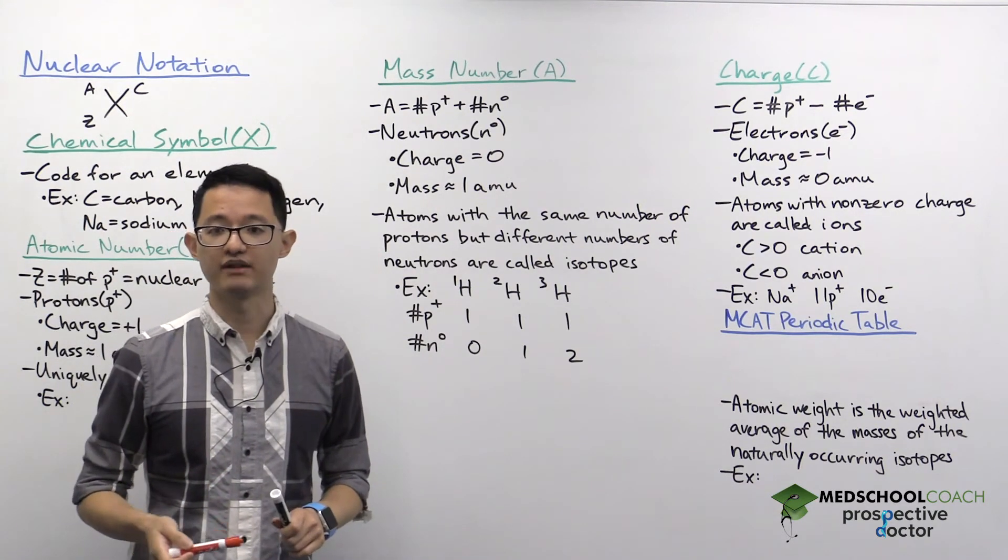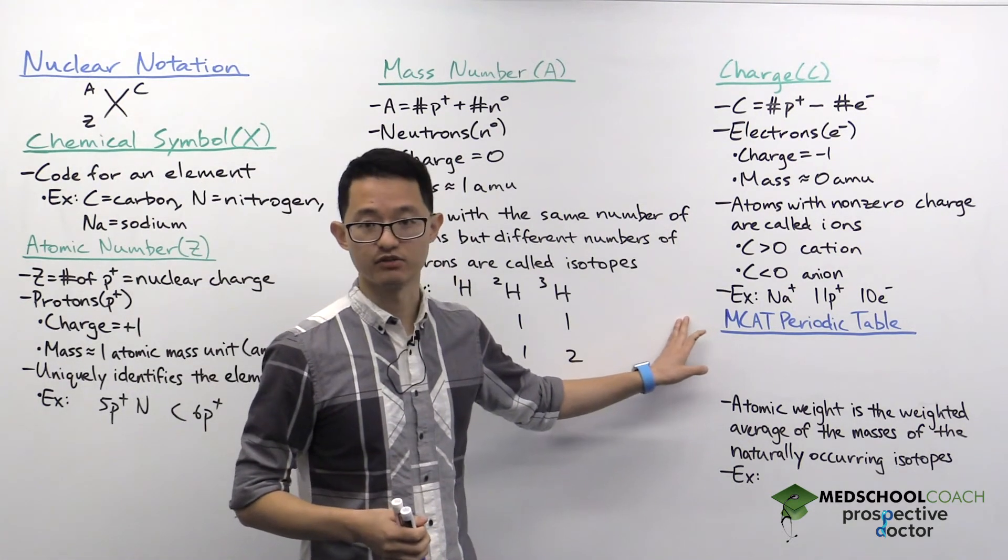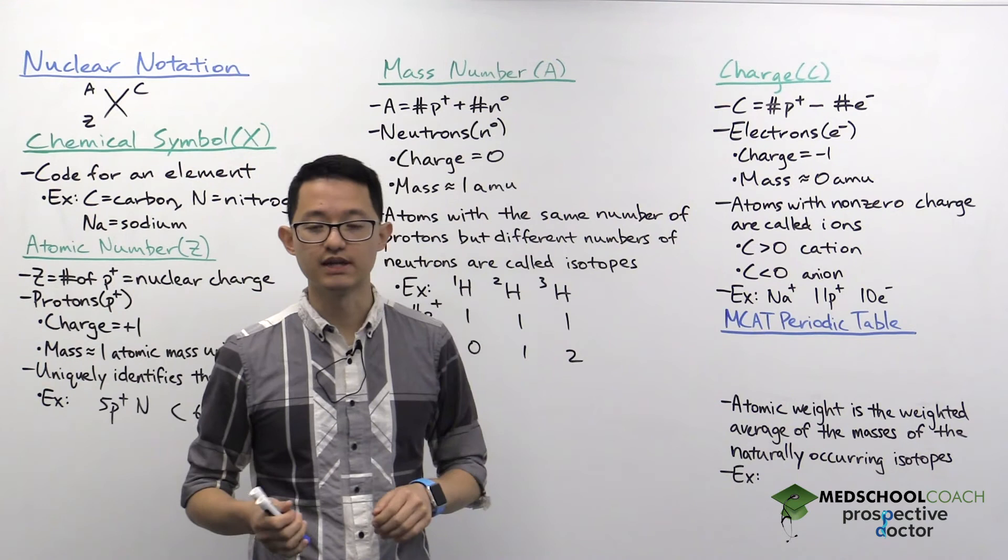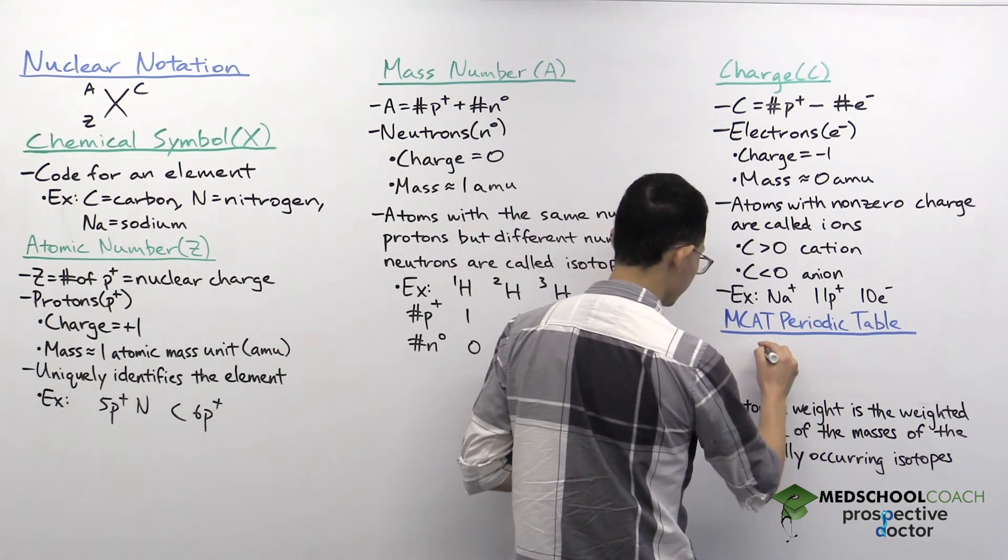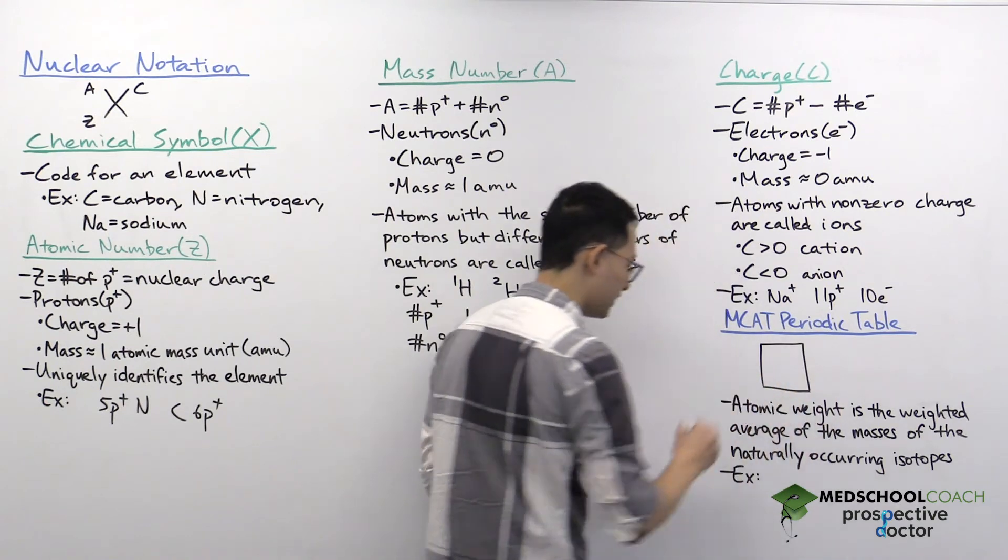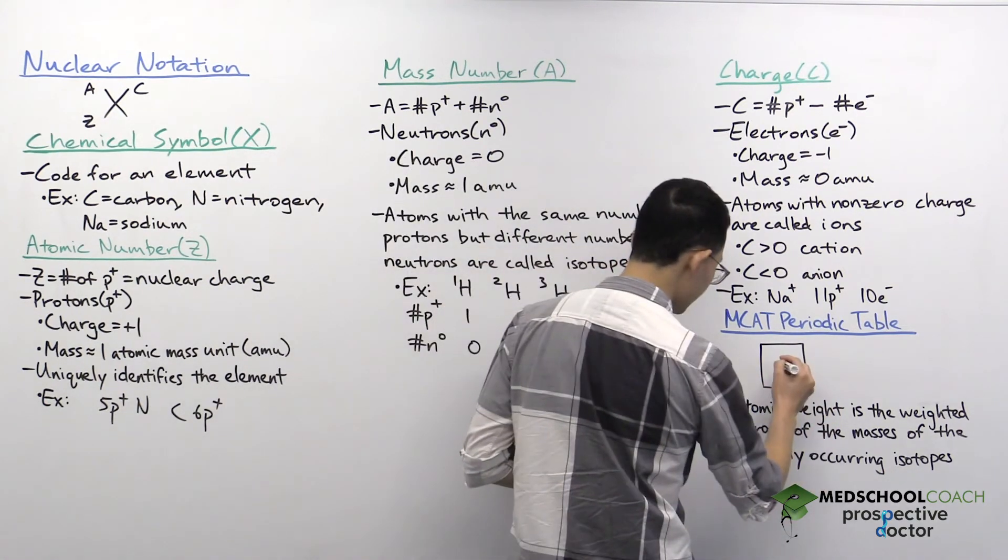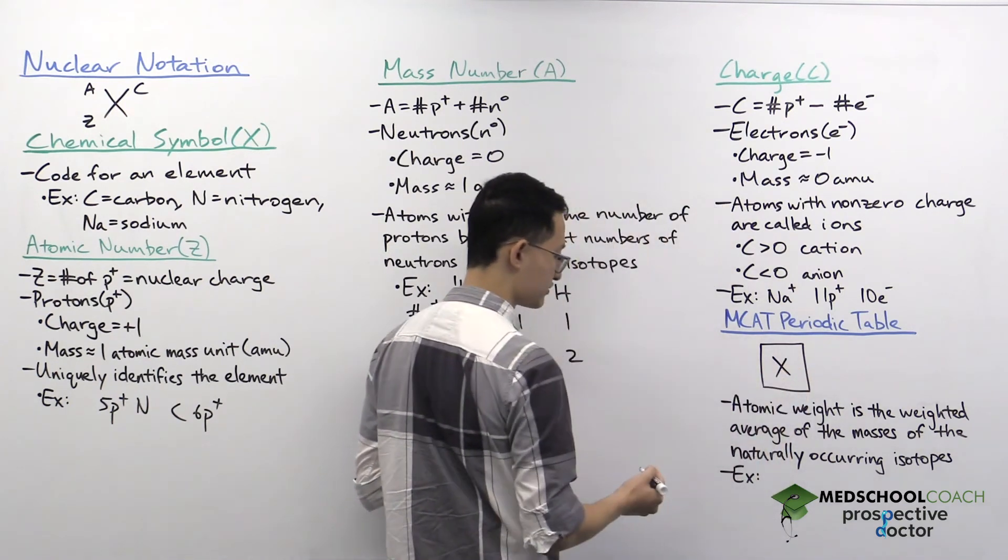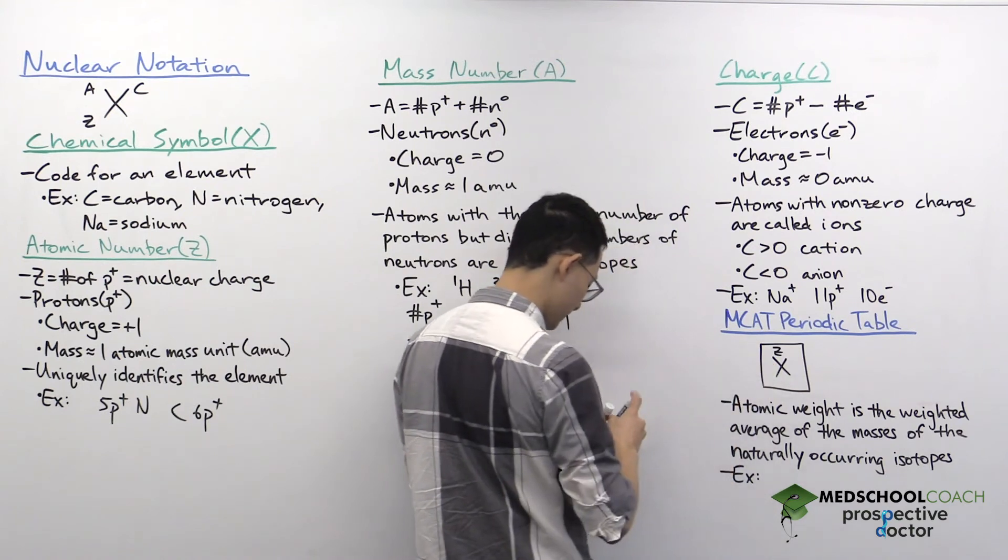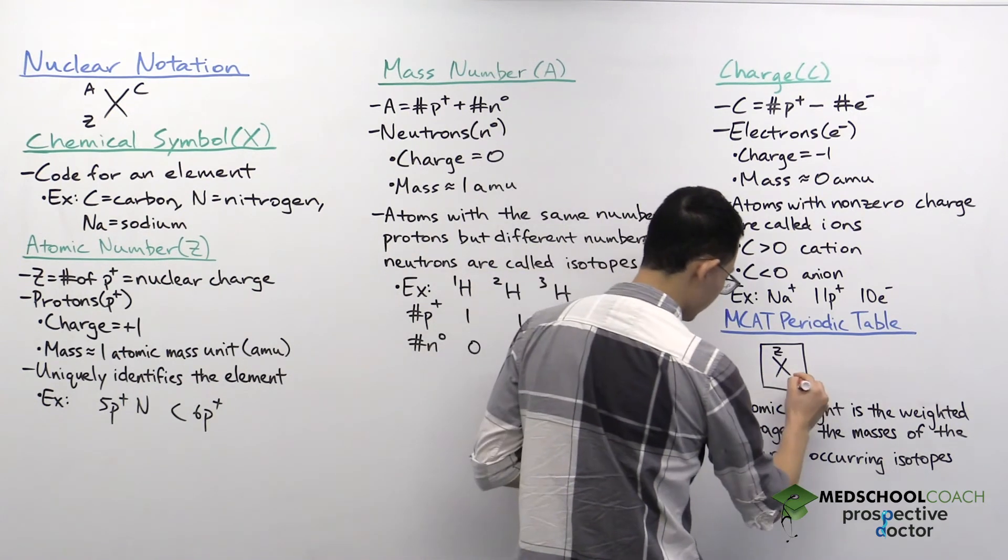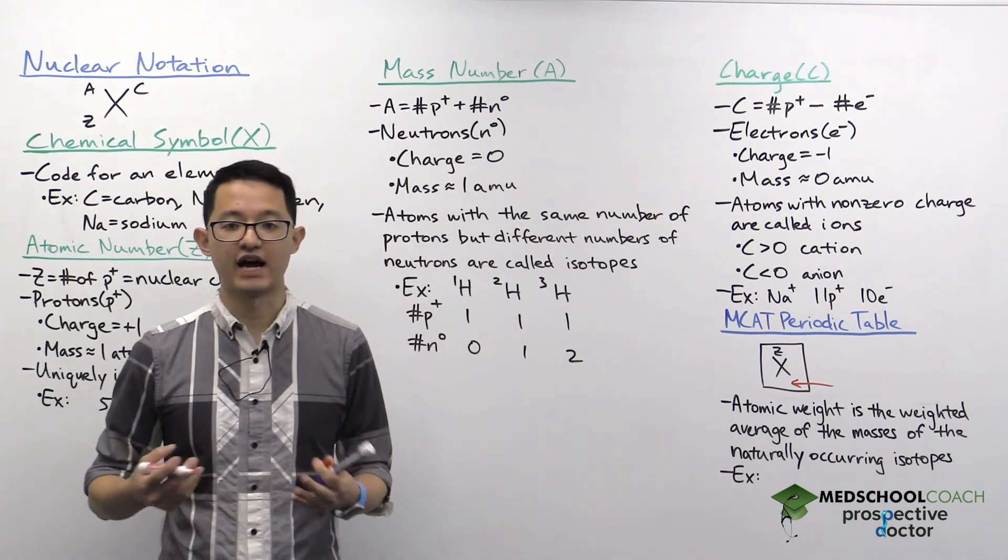But now I want to talk a bit about the periodic table. And that's because on the MCAT, you will be given access to a periodic table. So if you click a button, the periodic table shows up and you're going to see all of the cells that you're used to seeing, but the arrangement is slightly different from nuclear notation. Right in the center, you do have the chemical symbol. The atomic number is located on the top, right above the chemical symbol. And this value below, you often use it to do your stoichiometric calculations.